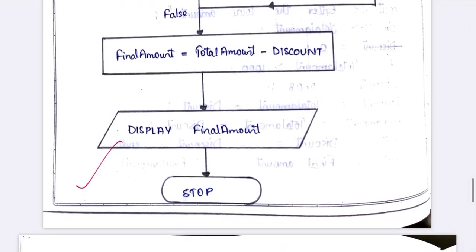The last step is stop. This is the algorithm and flowchart of this particular program. I hope you understood each and every step. If you like this video, please hit a like, don't forget to subscribe to my channel, and if you have any doubts, please leave a comment. Thank you.